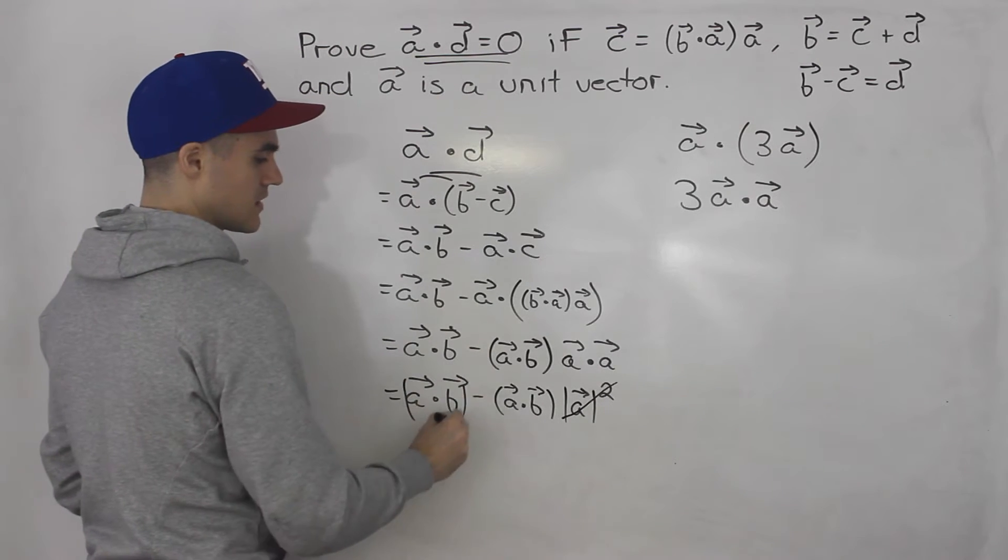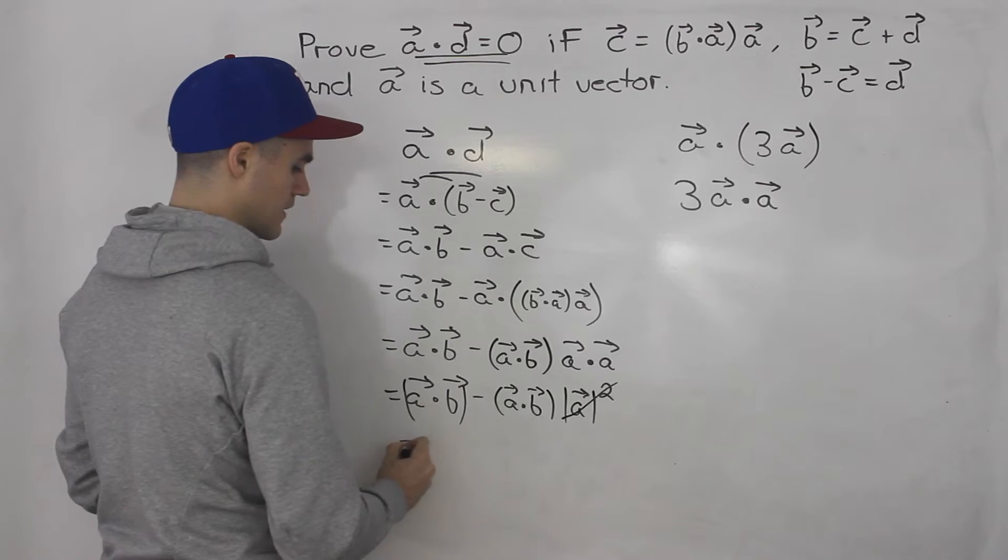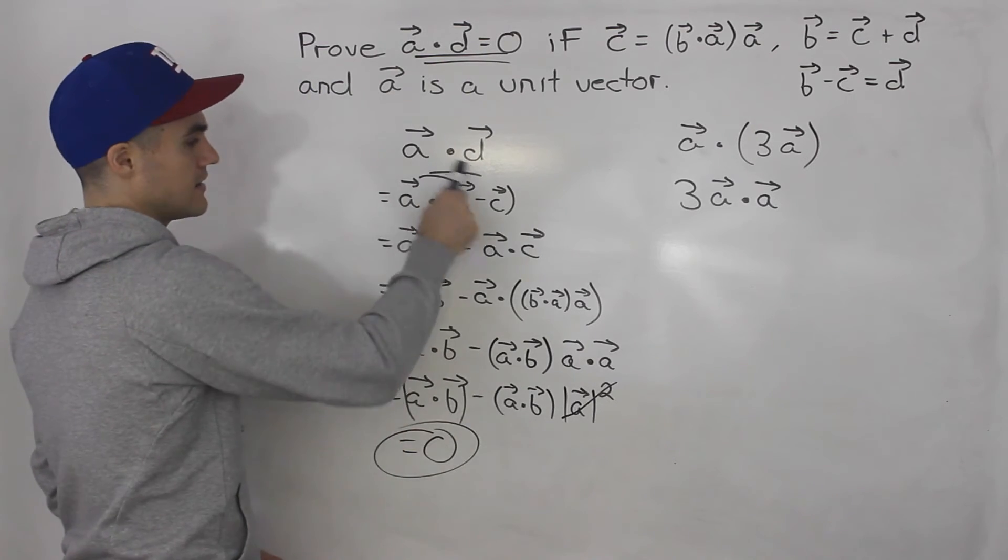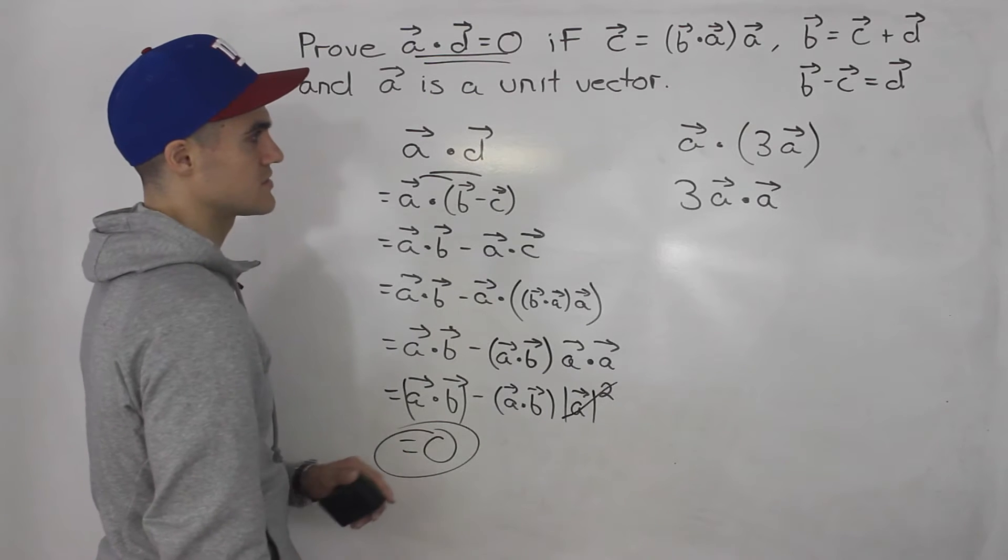And now notice that we have a dot b minus a dot b, and that's just equal to zero. So we prove that a dot d is equal to zero.